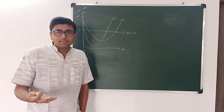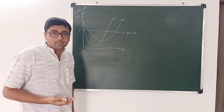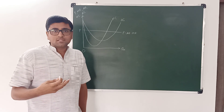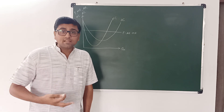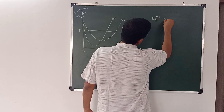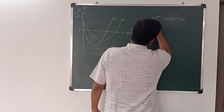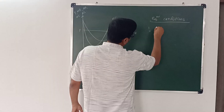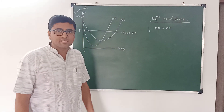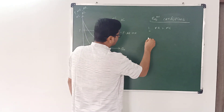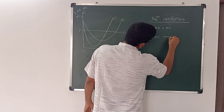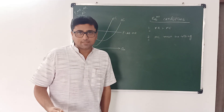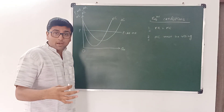Now we want to find the equilibrium output of this firm and whether this firm is making profit or loss in the short term. Before we find whether this firm is earning profit or not, we first need to look at the equilibrium conditions. The first condition is MR equals MC, that is marginal revenue equals marginal cost, and the second condition is that MC must be rising at the equilibrium point.